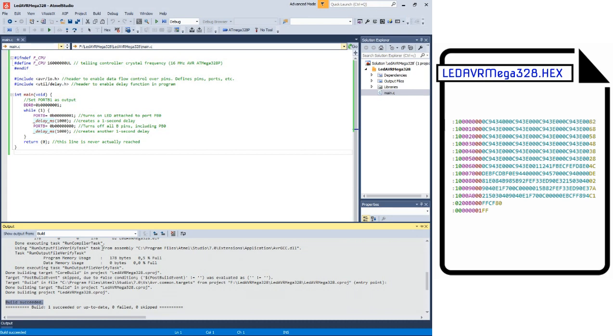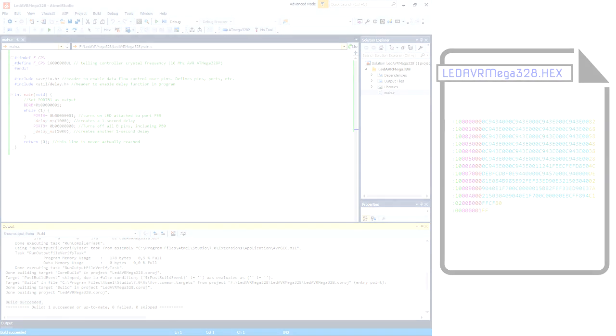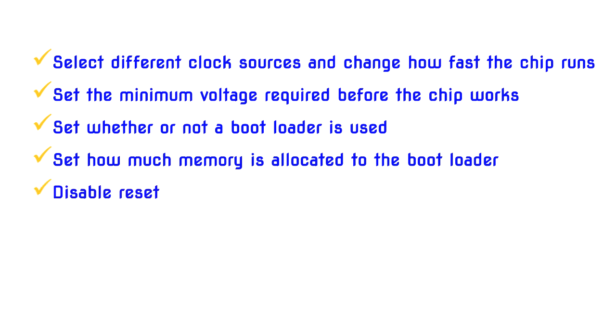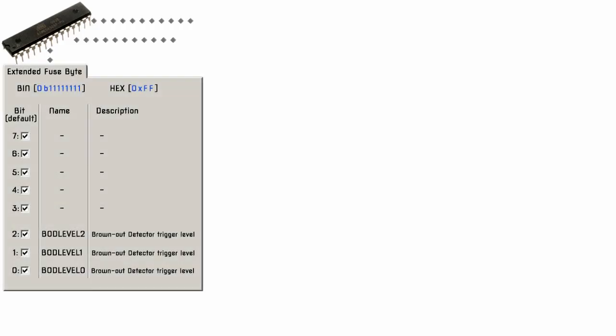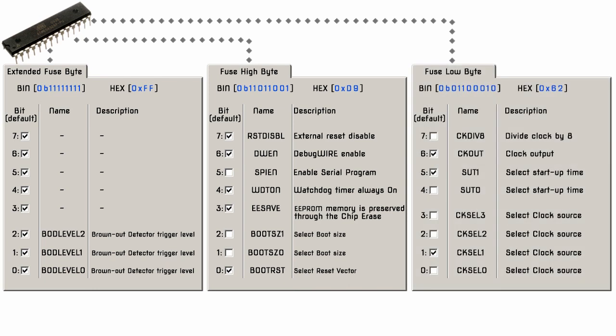First we need to configure the fuse bits of the microcontroller. It is important to remember that some of the fuse bits can be used to lock certain aspects of the chip and can potentially brick it — make it unusable. There are a total of 19 fuse bits used in the ATmega328P, separated into 3 different fuse bytes. 3 bits are in the extended fuse byte, 8 in the fuse high byte, and 8 in the fuse low byte. There is also a 4th byte for lock bits, which are not covered in this video.